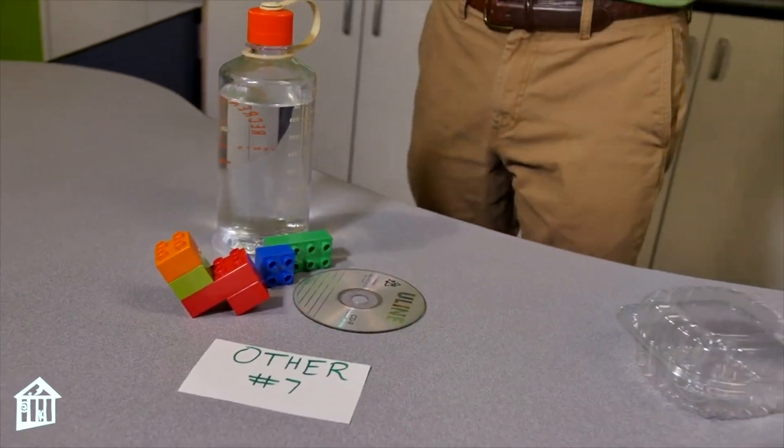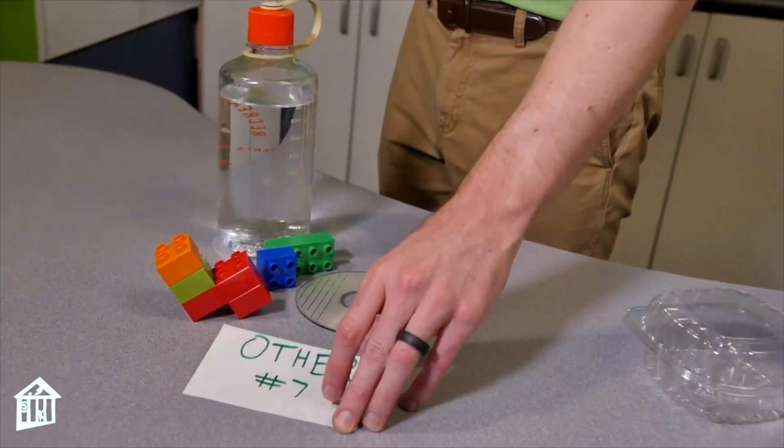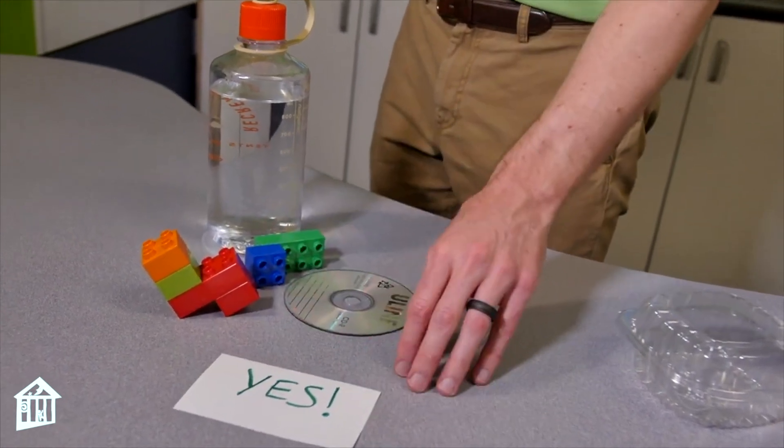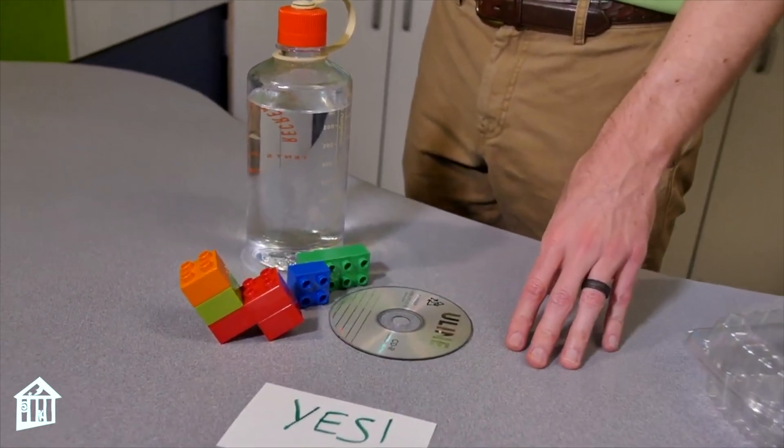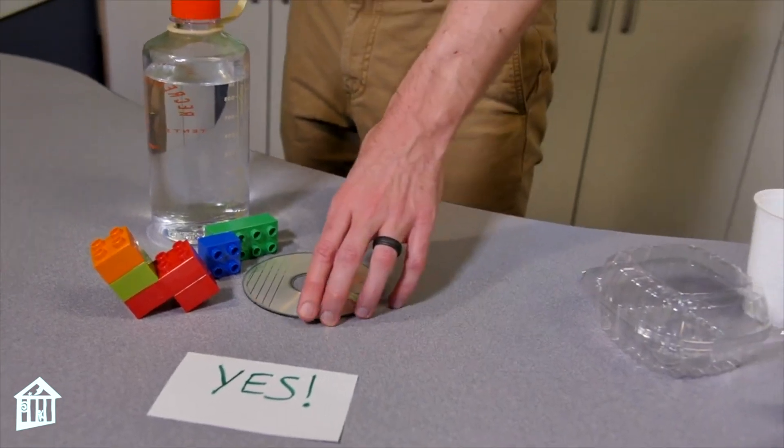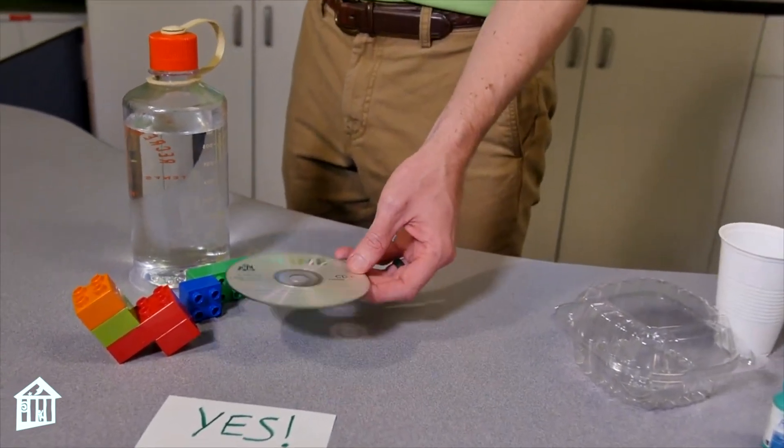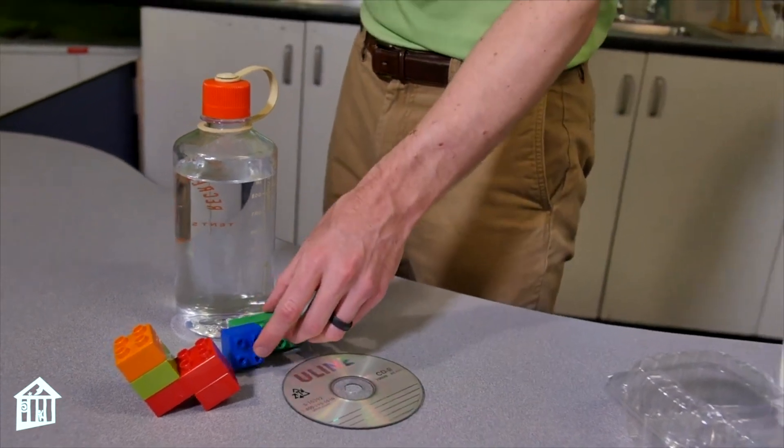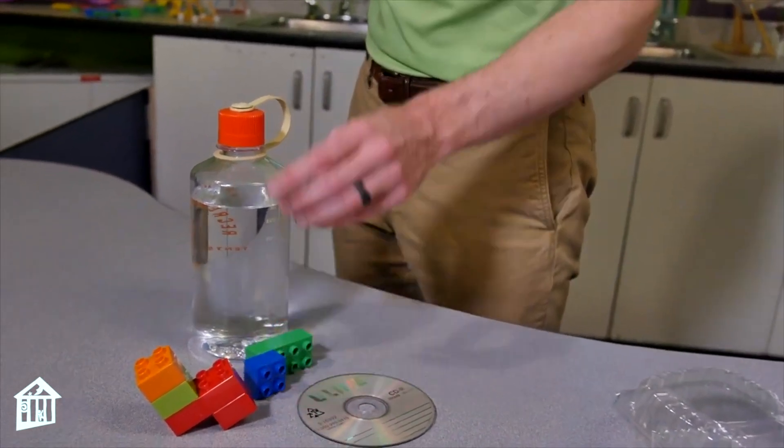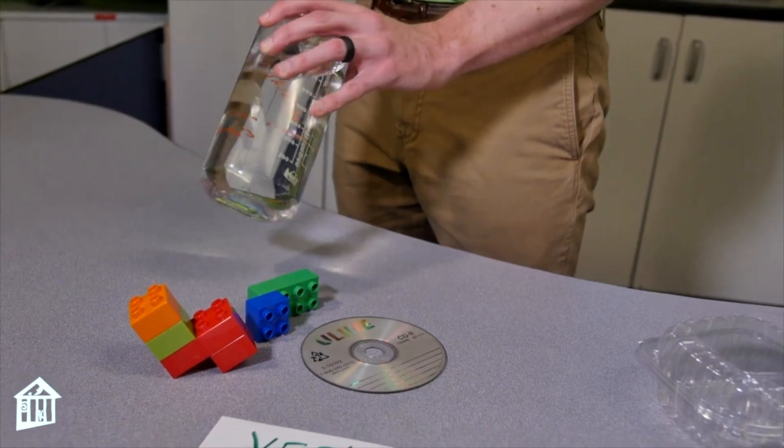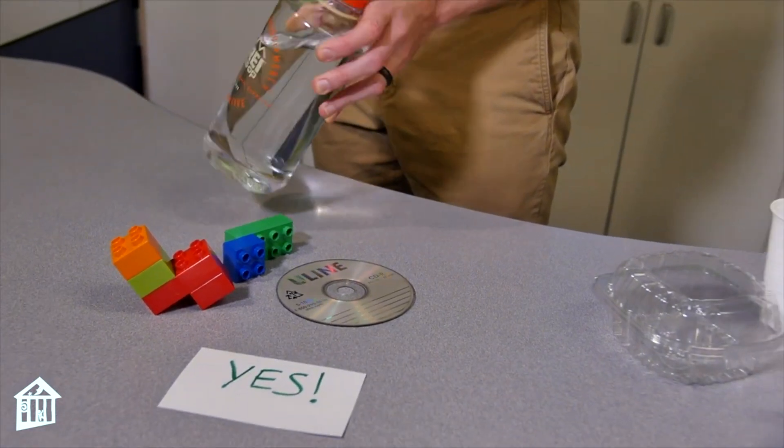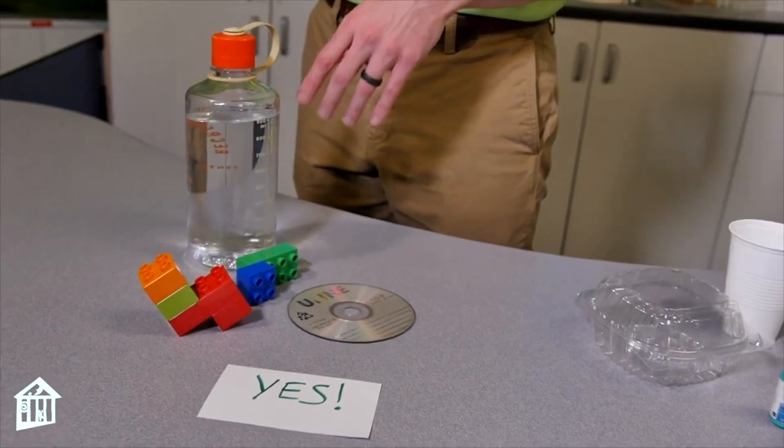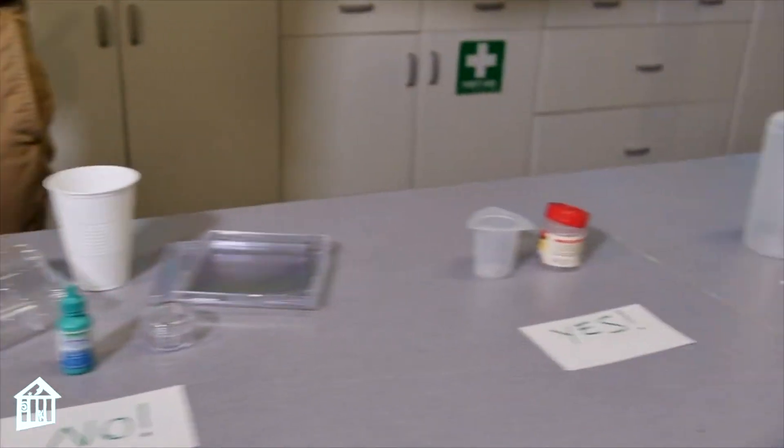Then our plastics number seven is kind of a catch all. This includes a lot of different plastics, which a lot of them are recyclable. So like nylon and polycarbonate are recyclable. And so what's kind of lumped in here is CDs have plastics number seven, some Lego blocks, and also a reusable water bottle can also contain plastics from this grouping. So check out all the plastics around your house to see whether you can recycle it or not.